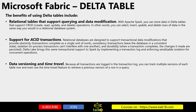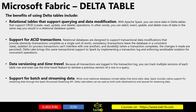Another benefit is data versioning and time travel. Because all transactions are logged in the transaction log, you can track multiple versions of each table row and even use the time travel feature to retrieve a previous version of a row in a query. Delta tables also support both batch and streaming data. While most relational databases include tables that store static data, Spark includes native support for streaming data through the Spark Structured Streaming API. Delta Lake tables can be used as both a sink destination and a source for streaming data.